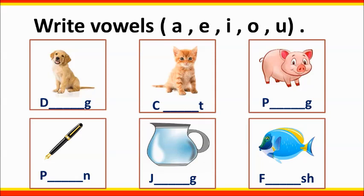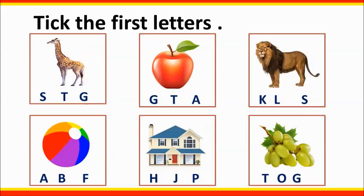Write bubbles. O, C, A, T — cat. P, I, G — pig. P, E, N — pan. J, U, G — jug. F, I, S, H — fish.